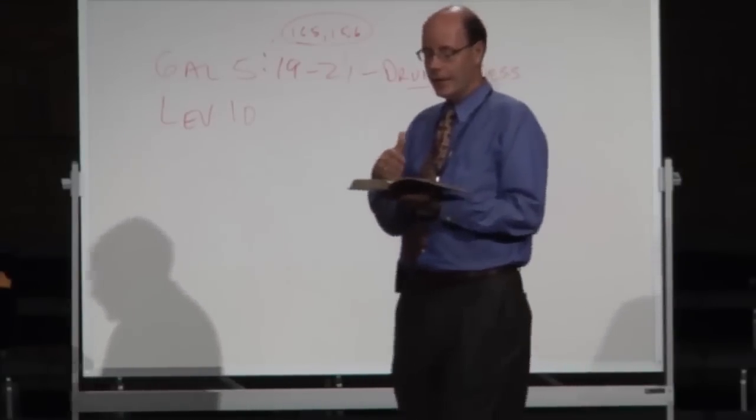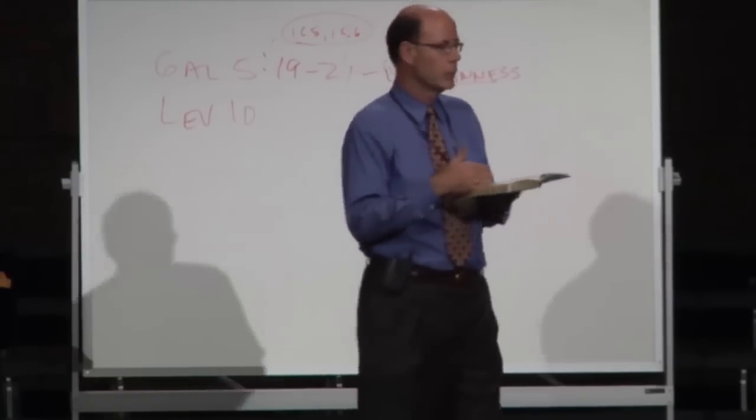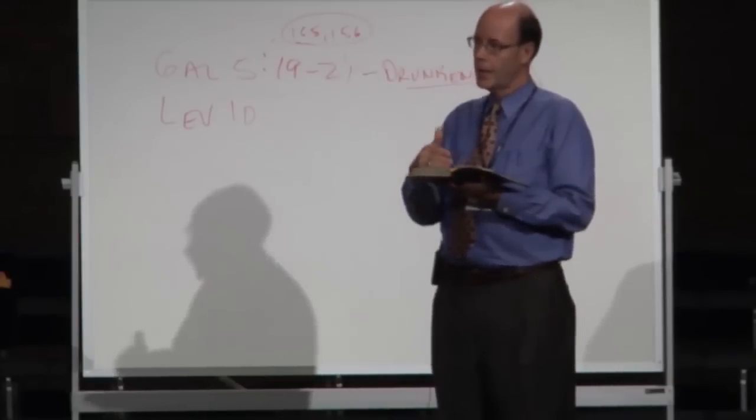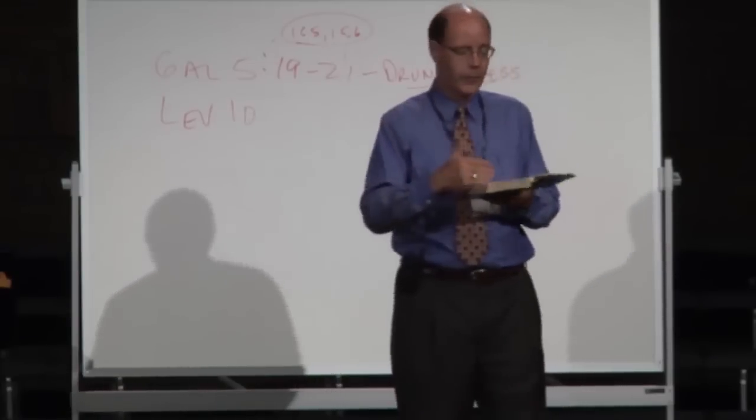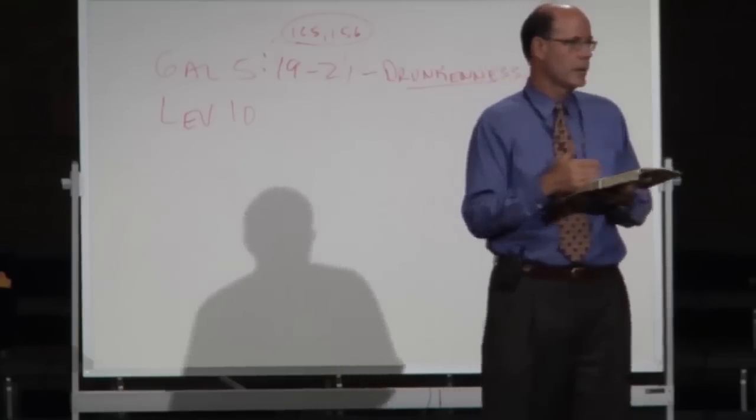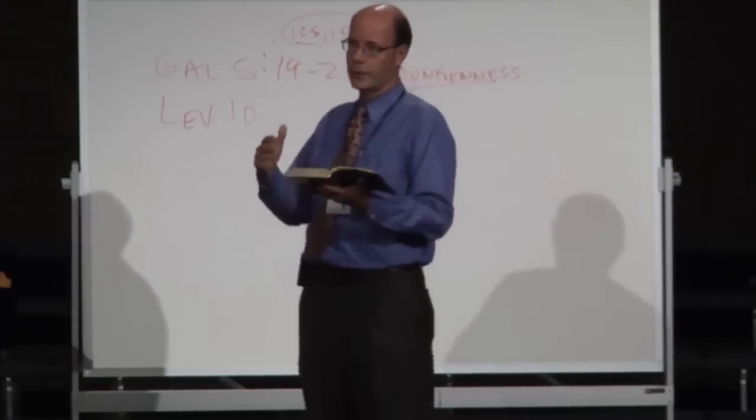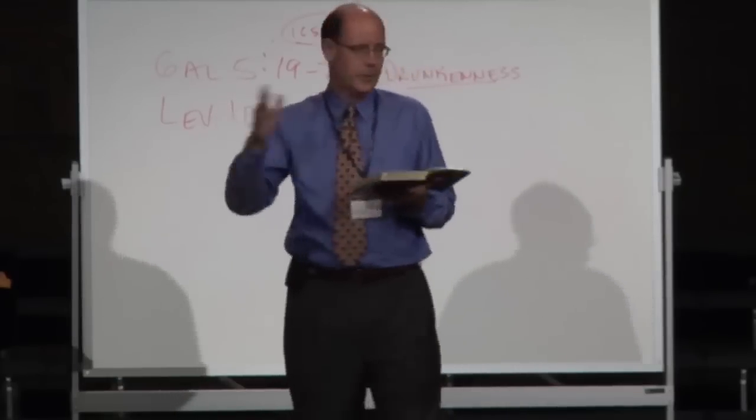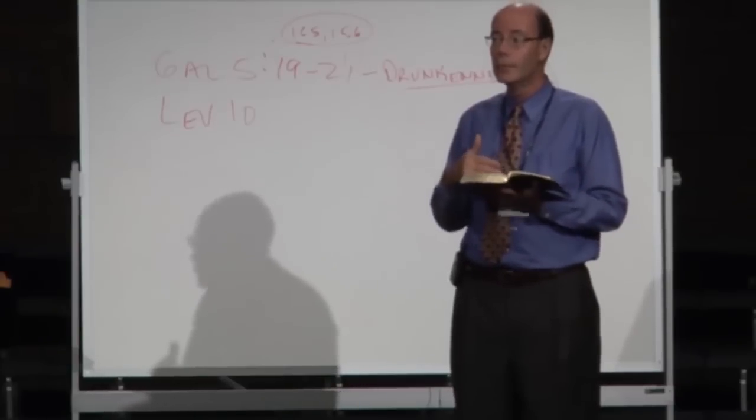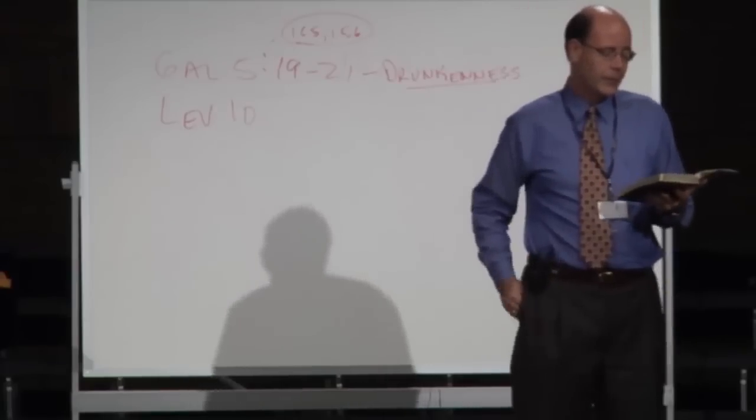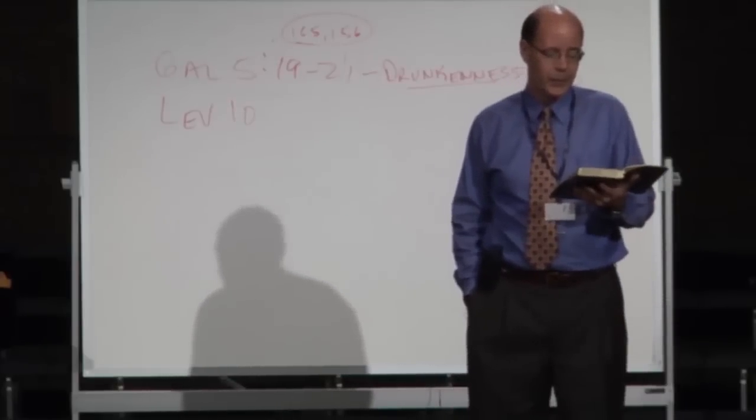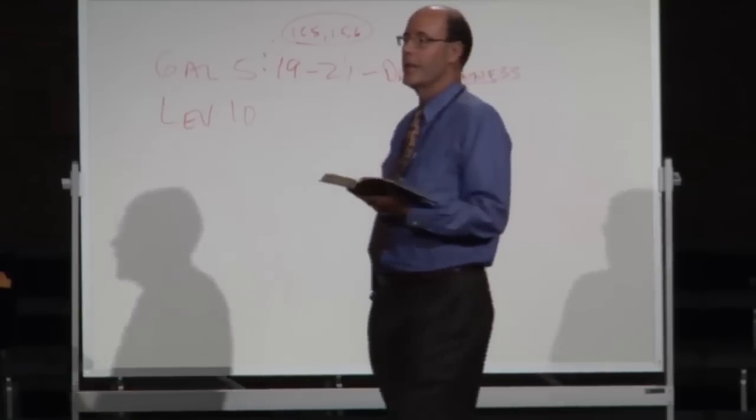One way to always understand the Old Testament is that if something is abhorrent to God in the Old Testament, do you think it's not abhorrent to God in the New Testament? Think about if God says this is an abomination, is it something that he would change? God is immutable. But watch what it says in chapter 10. Nadab and Abihu, the sons of Aaron, took their censer, put fire in it, put incense in it, and they offered profane fire before the Lord, which he had not commanded them. So the fire went out from before the Lord and devoured them.